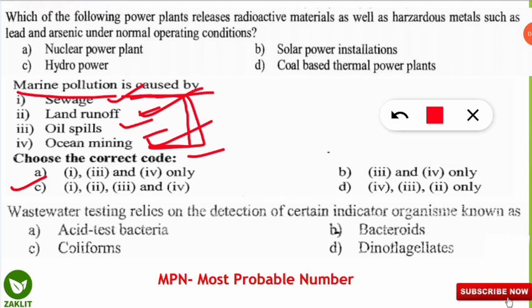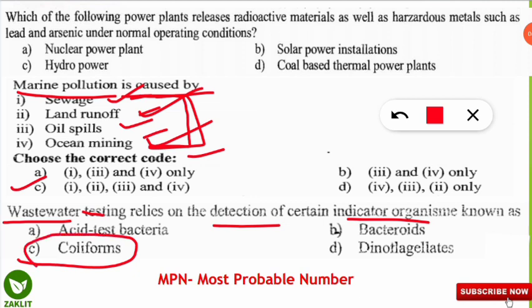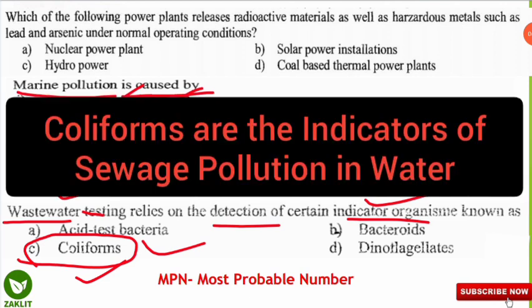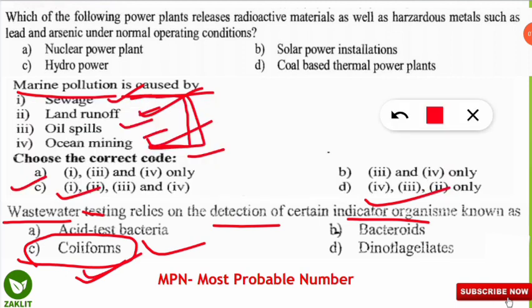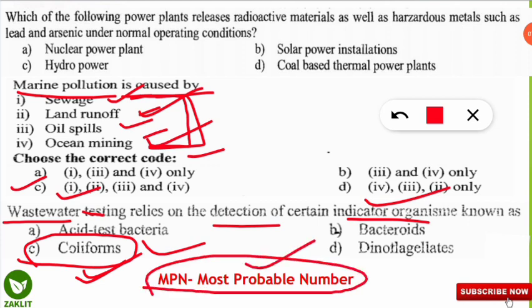The next question: wastewater testing relies on the detection of certain indicator organisms known as what? This is one of the frequently asked questions in environmental science entrances. The correct option is C — coliform bacteria are the indicator organisms. If wastewater contains coliform bacteria, it indicates pollution. The technique to count coliforms in water is the MPN technique — Most Probable Number technique — which detects how much quantity of coliforms are present.